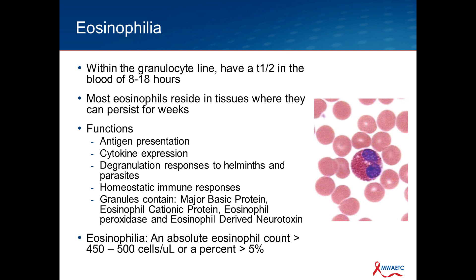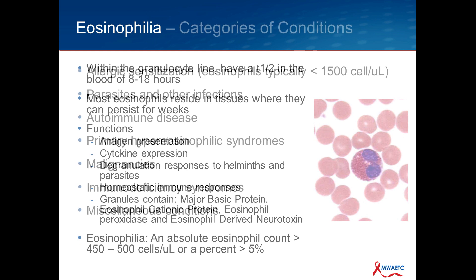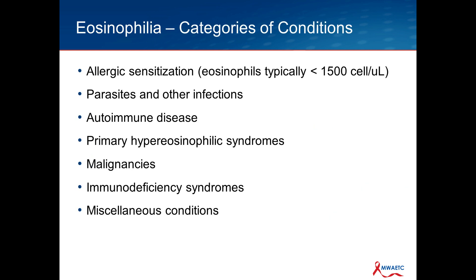Eosinophils degranulate in response to helminth infections and some parasitic infections. They have a role in maintaining immune homeostasis and elaborate mostly inhibitory cytokines. When trying to kill something, they have a lot of toxic proteins in their granules: major basic protein, eosinophil cationic protein, eosinophil peroxidase, and a neurotoxin. Eosinophilia is defined as an absolute eosinophil count greater than 450 to 500, or a percentage greater than 5%.